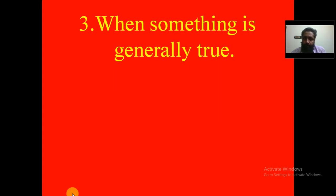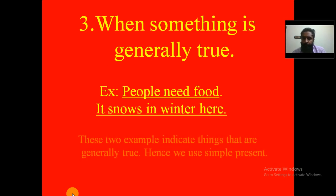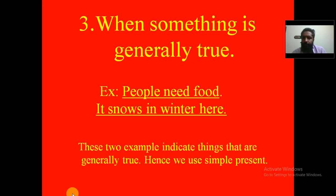We use the simple present tense when something is generally true. Examples: 'People need food' and 'It snows in winter here.' Both are generally true statements — people needing food and snow in winter are universal truths — so we use the simple present tense.